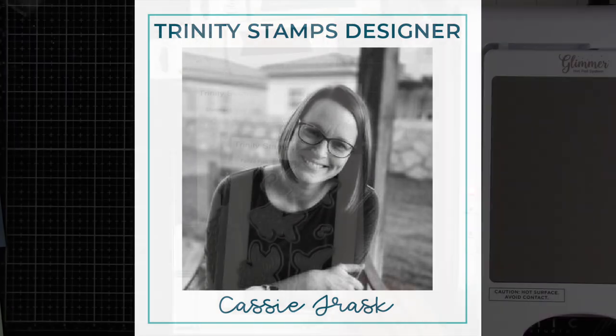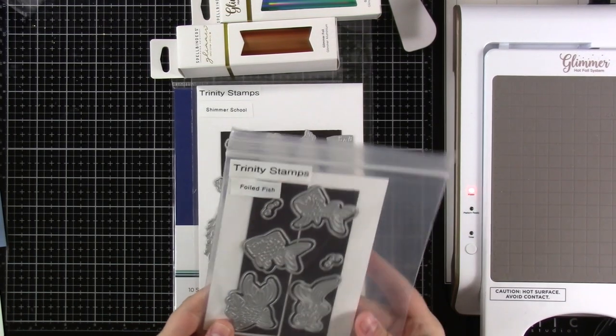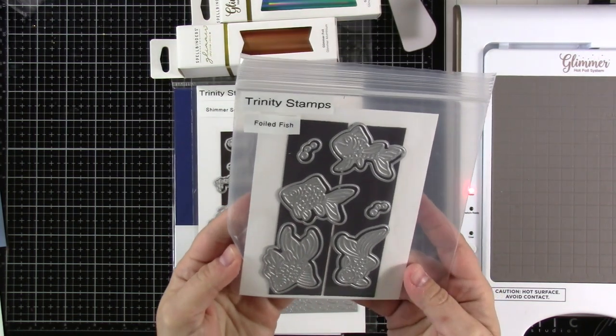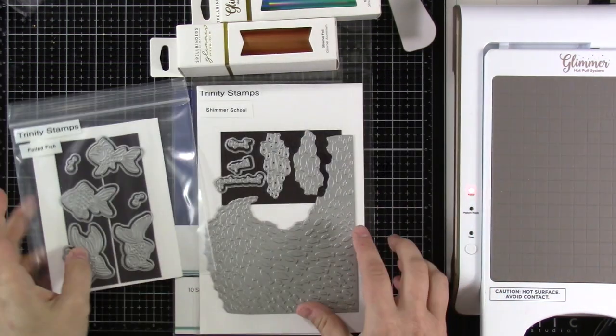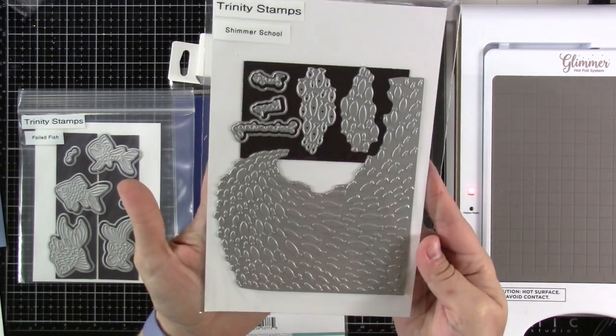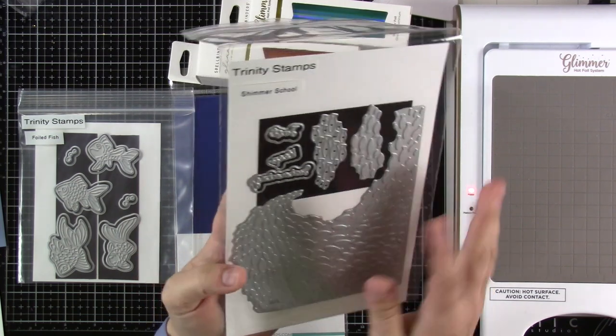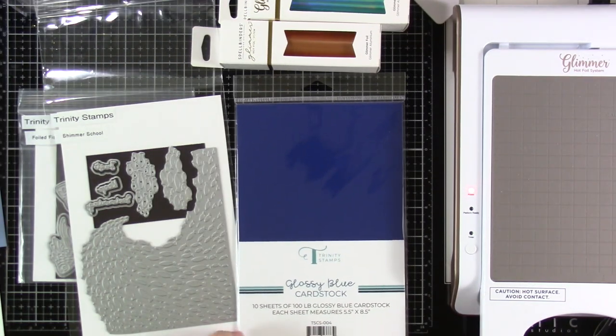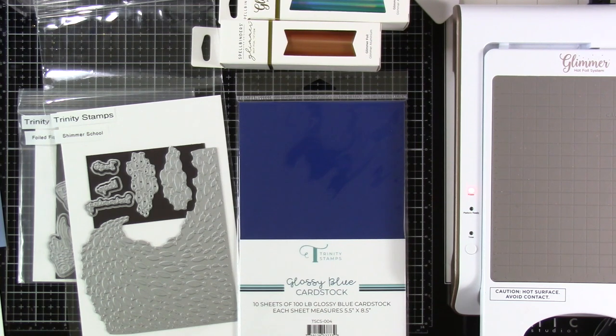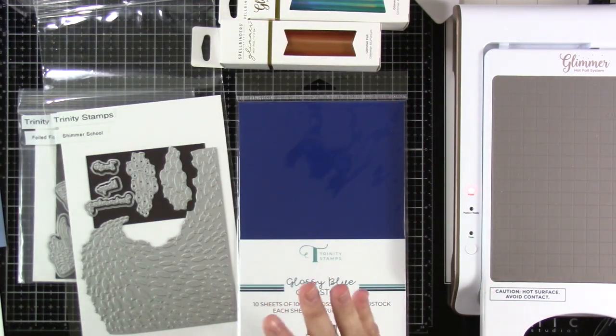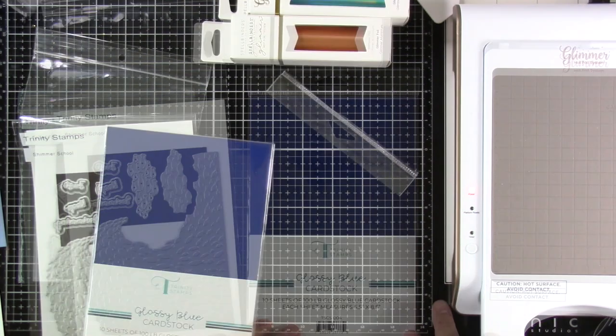Today we are going to be making some foiled coffee mugs with some of the new products and some old products. This first product we're using is our foiled fish. We also have our shimmer school. These are all hot foiling plates that can be used with your Glimmer hot foil system or whatever hot foiling system that you might have. We're also going to bring in some glossy blue cardstock and some glossy black and glossy red cardstocks. So let's go ahead and get started.